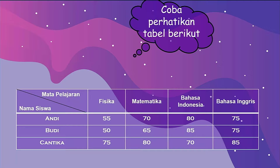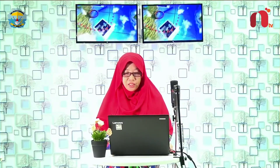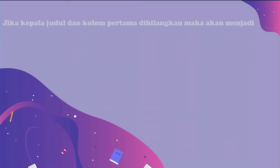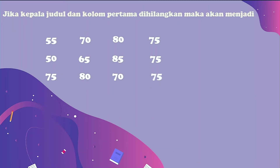Seandainya kita hilangkan kepala judul dan kolom pertama, maka akan ada susunan bilangan-bilangan. Ketika kepala judulnya dan kolom pertamanya kita hilangkan, berikutnya kita kasih tanda kurung. Inilah yang disebut dengan matriks.